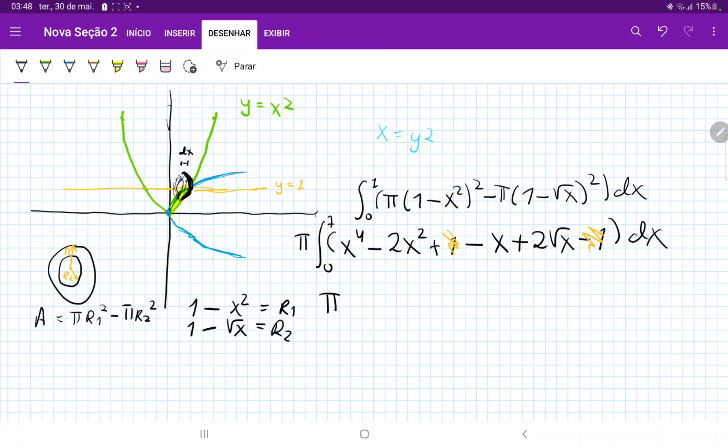So our integral is, let's see, pi times x⁵ over 5, minus 2x³ over 3, minus x² over 2, and then let's see, plus 2 times x^(3/2), and then times, divided by 2/3, so times 3 over 2, right? So we're going to remove this 2, and then times 3.